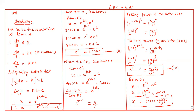Now e raised to kt got a value, and we asked for population x. x equals e raised to kt into e raised to c. e raised to c has value 30,000, and e raised to kt equals 4/3 raised to t upon 40. So x equals 30,000 into 4/3 raised to t upon 40. This is the answer at time t. This is your question number 4.